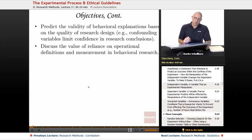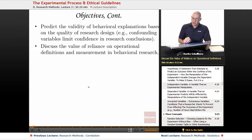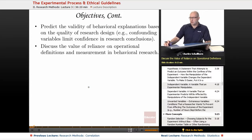For more objectives: predict the validity of behavioral explanations based on the quality of research design. For example, confounding variables limit confidence in research conclusions. And finally, discuss the value of reliance on operational definitions and measurement in behavioral research. That's the big picture overview that the College Board wants you to get out of this entire methodology unit.